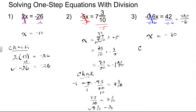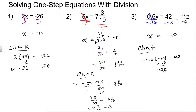Moving into check mode, we substitute our solution negative 70 into the original equation: negative 0.6 times negative 70 needs to equal positive 42. Multiplying: 6 times 0 is 0, 6 times 7 is 42. Since 6 tenths has one decimal place, the decimal moves one place left from 420, giving us 42 is equal to 42. The work checks out.